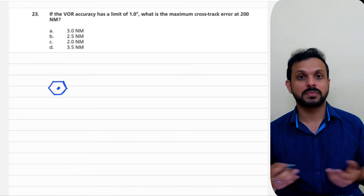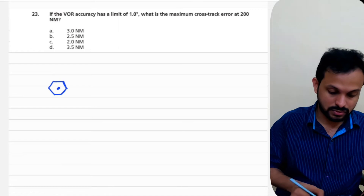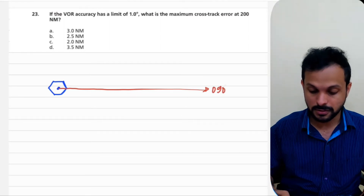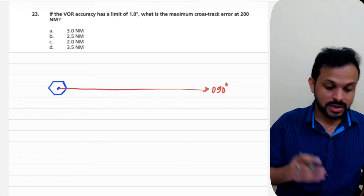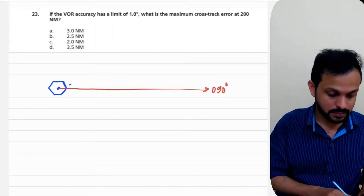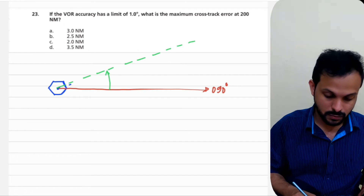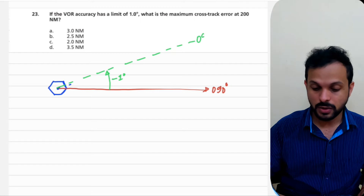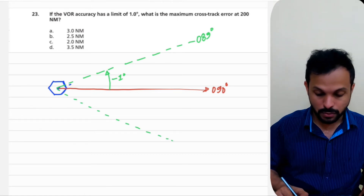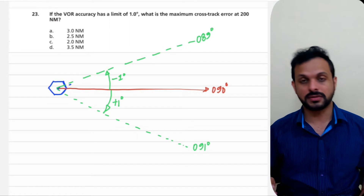So here I have a VOR station whose accuracy is given as plus or minus one degree. The meaning of that is: if you take a radial, say the 090 radial — radials are magnetic tracks moving out of a VOR — an accuracy limit of one degree means when the VOR receiver indicates a radial of 090, you could be anywhere between one degree less, which is 089 degrees, or one degree more, which is 091 degrees.